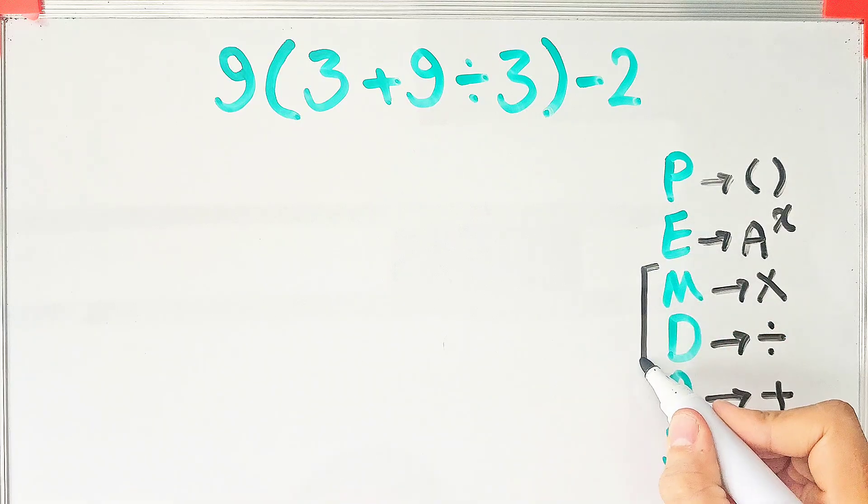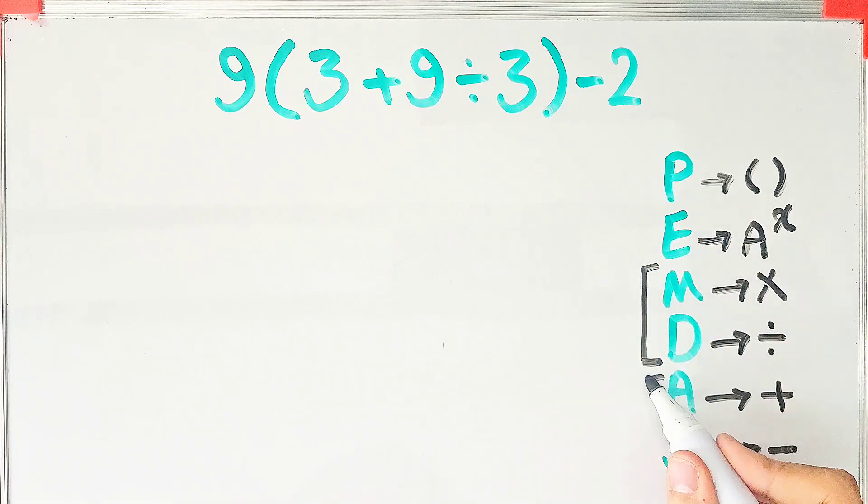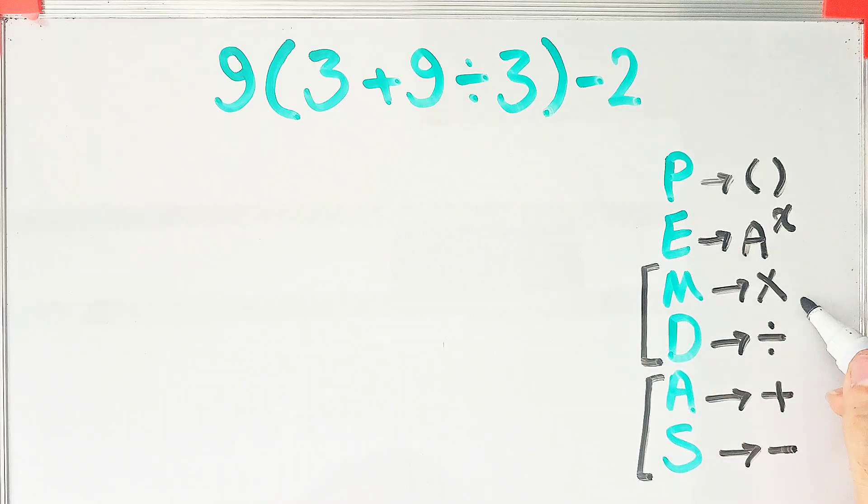Multiplication and division have the same level of priority, and addition and subtraction have the same level of priority. When we have both in an expression, we start from the left and simplify the question.